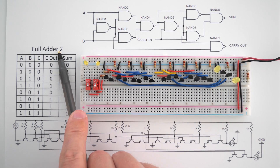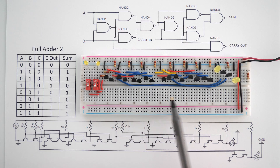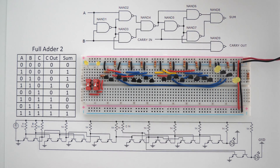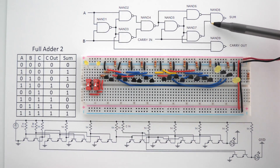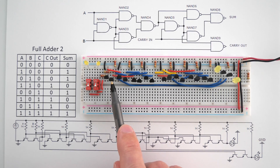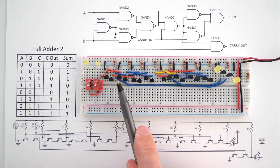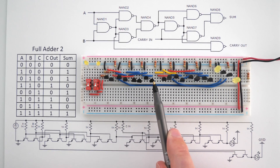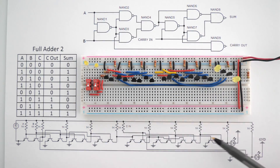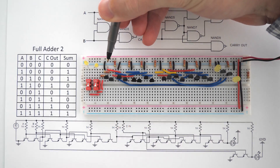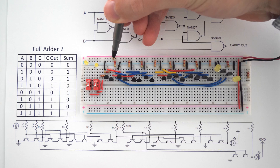Here we have full adder 2, which is a second way to build a full adder. It is actually built by using nine NAND gates, and each NAND gate is only two transistors. This is drawn how it is shown in the schematic, where these two transistors are NAND gate 1, NAND gate 2, NAND gate 3, NAND gate 4, etc., all the way down. Again, the circuit diagram is drawn as if input A was coming in here and input B was coming in here.